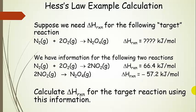Here's an example calculation — a fairly simple but typical one. A more in-depth example will be posted later. Suppose we need delta H reaction for this target reaction, and we don't have it directly. We want to figure out a way to get this change in enthalpy for the reaction. We do have information for these two reactions and their associated delta H reactions, so we want to calculate delta H reaction for the target reaction using this information.